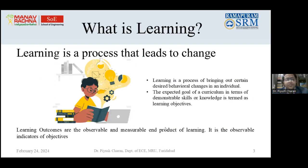Let's start with the definition of learning. Learning is a process that leads to change — a process of bringing out certain desired behavioral changes in an individual. The expected goal of a curriculum in terms of demonstrable skills or knowledge is termed as learning objectives. Learning outcomes are the observable and measurable products of learning; they are observable indicators of objectives.